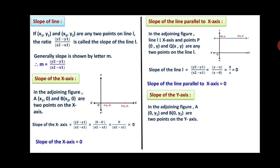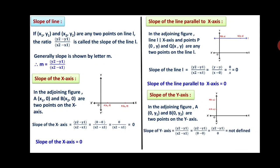Slope of the y-axis: A(0, y1) and B(0, y2) are two points on the y-axis. Slope of the y-axis = (y2 − y1)/(x2 − x1) = (y2 − y1)/(0 − 0) = (y2 − y1)/0, which is not defined. Therefore the slope of the y-axis cannot be determined.